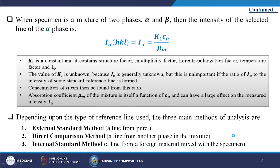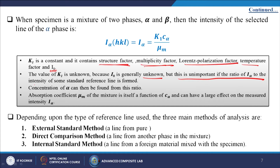When the specimen is a mixture of two phases alpha and beta, the intensity of a selected line of the alpha phase is: I_alpha = K1 * C_alpha / mu_m, where K1 is a constant containing the structure factor, multiplicity factor, Lorentz polarization factor, temperature factor, and I_0. The value of K1 is unknown because I_0 is generally unknown, but this is unimportant if the ratio of I_alpha to the intensity of some standard reference line is formed — the concentration of alpha can then be found from this ratio.